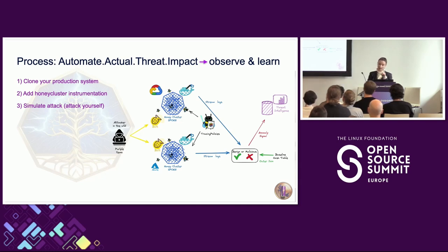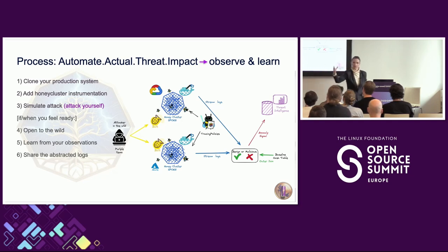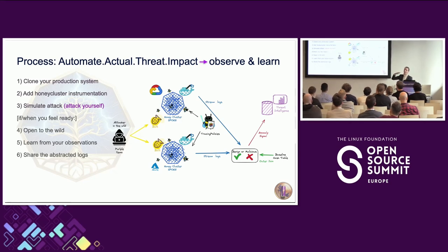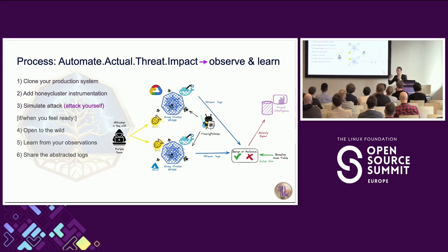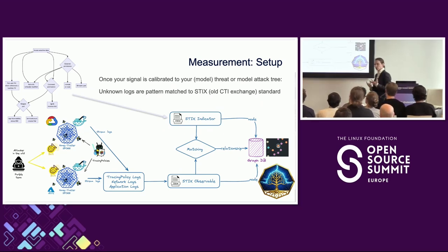We check that what we thought would come out actually happens. If that's what you're after, you can open up this infrastructure to the wild — typically it's just a network change — and then compare what you measured in calibration versus what real attackers actually do. The goal is to make this human-friendly by visualizing it, not reading endless log files, to reduce cognitive load.